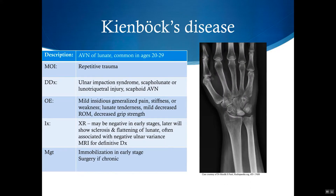Kienböck's disease, or avascular necrosis of the lunate, can happen with repetitive trauma. There's usually an insidious onset of generalized dorsal pain, stiffness, or weakness. Physical exam findings aren't very specific and can include tenderness of the lunate, decreased range of motion, and decreased grip strength. Early x-rays may be negative, but in later stages you'll see sclerosis and flattening of the lunate, like in this picture. MRI will show changes earlier on. If the x-rays are normal, then immobilization may be effective, but if there are radiographic changes or if there's progressive pain, then they should be referred to a surgeon.